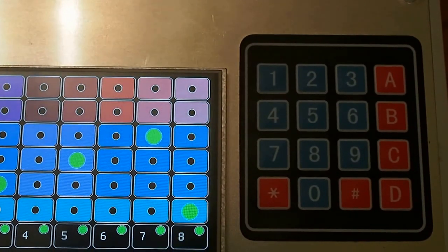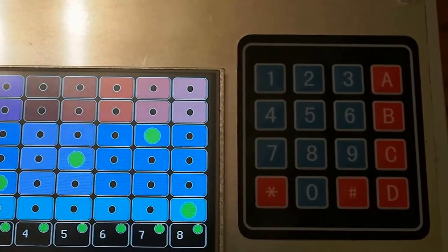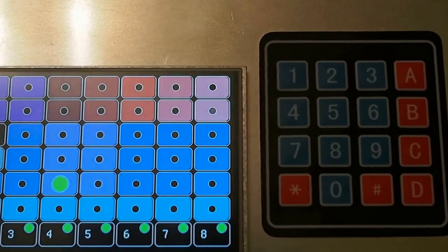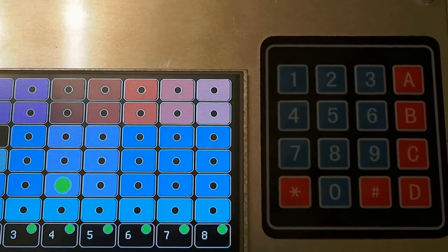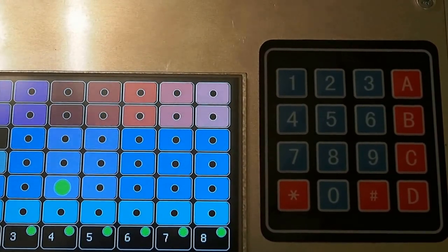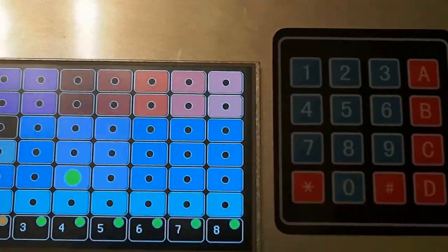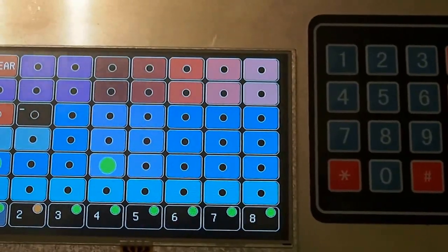So if I want to recall bank A1, I would say pound A1 pound, and it's going to recall everything from bank A1. If I want to save that configuration to C3, I can say star C3 star, and it's now going to save that configuration to C3.